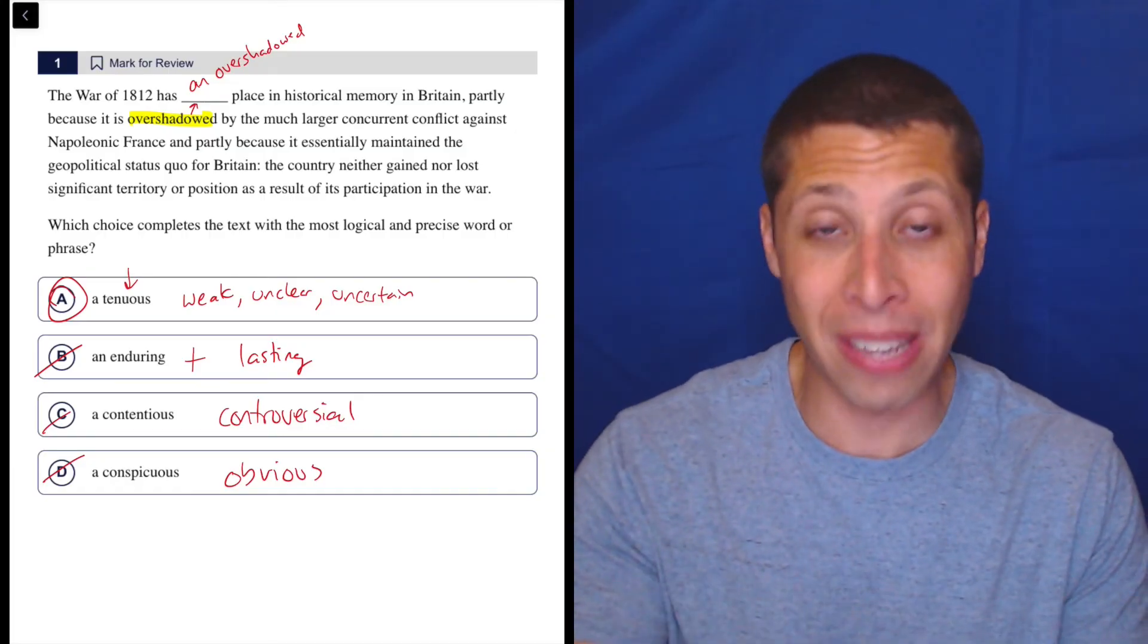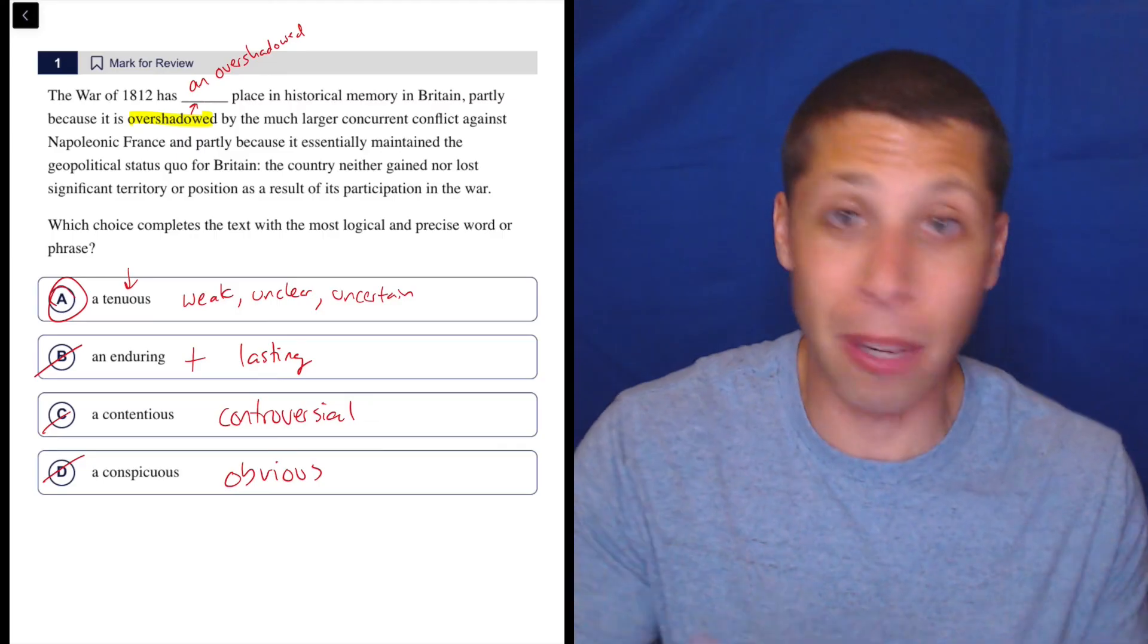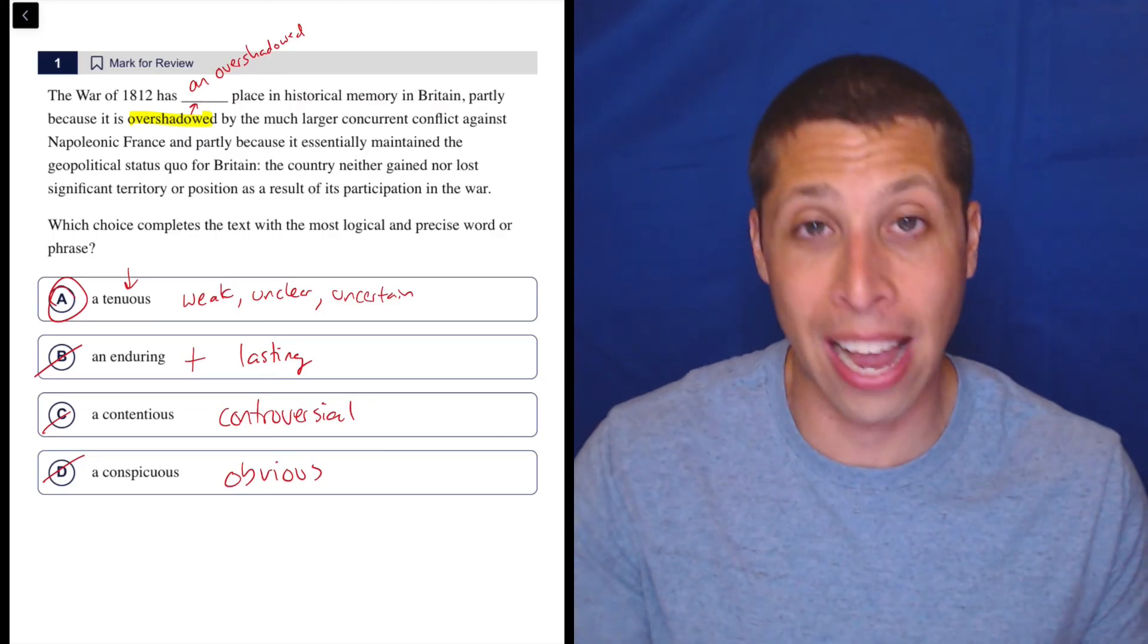It is a perfect fit here in that basically, overshadowed is going to mean something is weaker compared to something that's stronger. So that's exactly what tenuous means here.